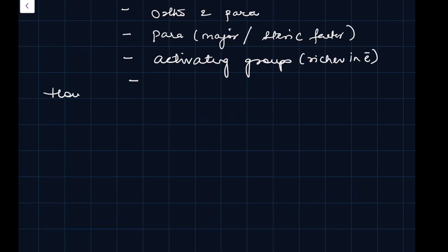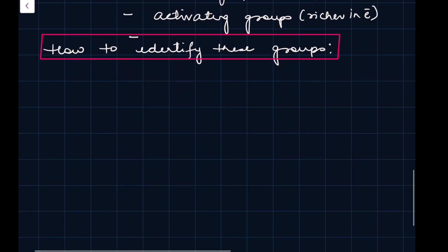These are also known as activating groups. They activate the ring, they make the ring richer in electron. How to identify the groups? You can follow my video on tricks to identify plus R and minus R. Such atom which is attached to the benzene ring, if it has got lone pair of electron, this will make it aniline, aryl ethers, halogen. They all have lone pair of electron and they all are going to be O-P directing. They will drive the next group on the ortho position.